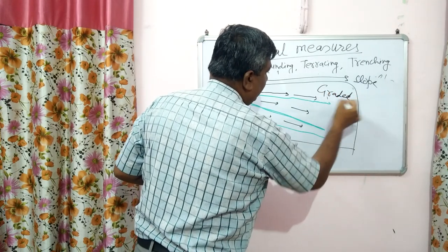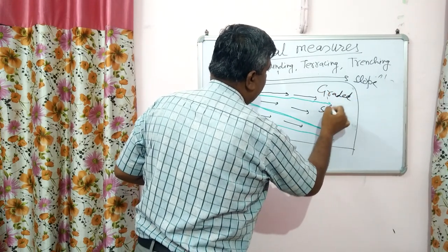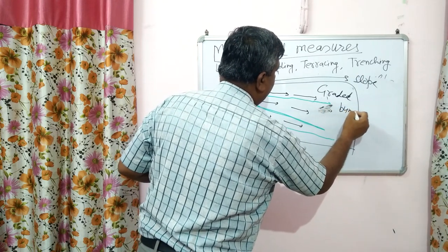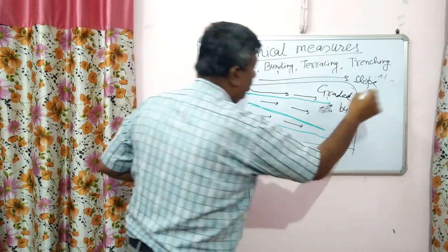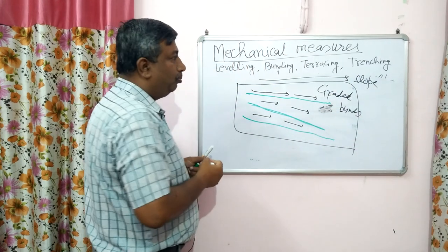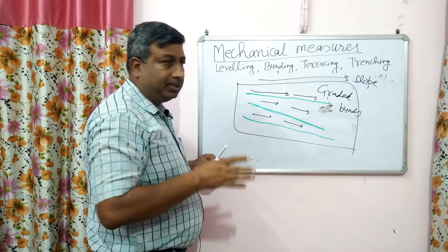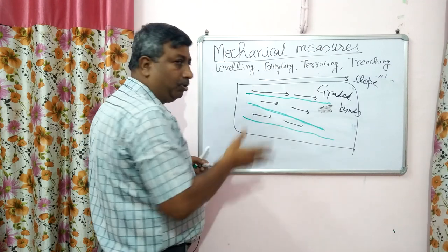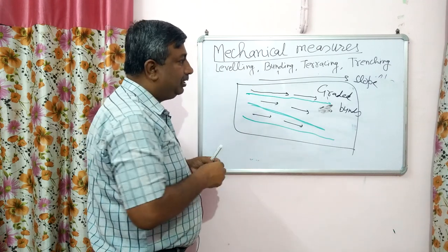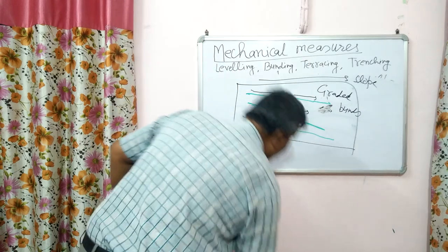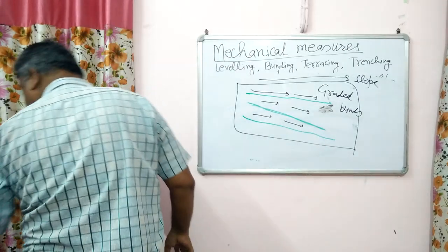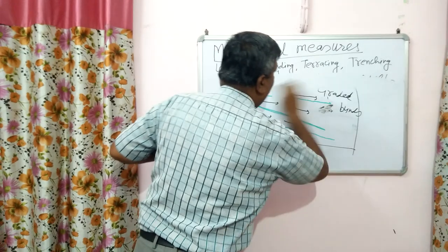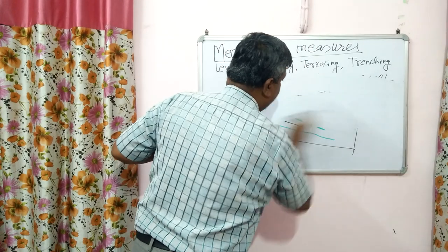Grade means slope, so graded bunds are made along the slope. There are different types of bunds: side bund, contour bund, lateral bund, and graded bund. The objective of graded bunds is safe removal of excess water.